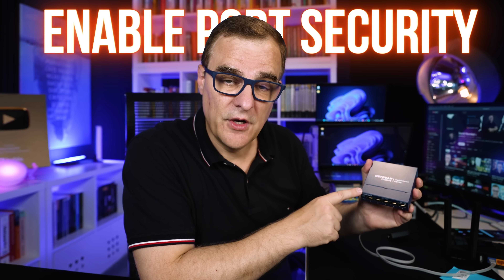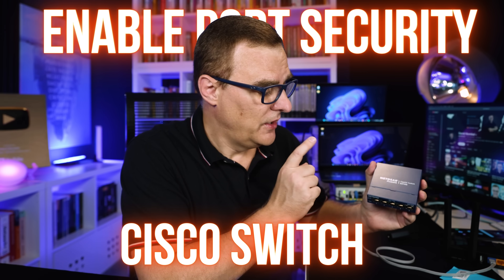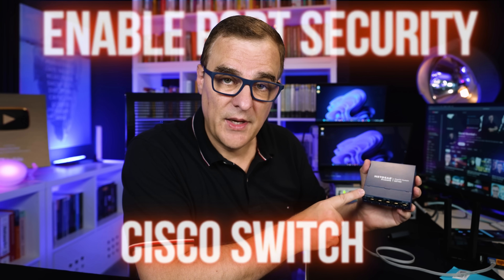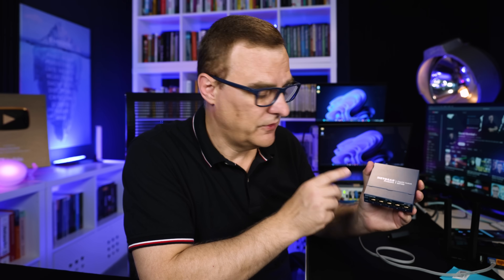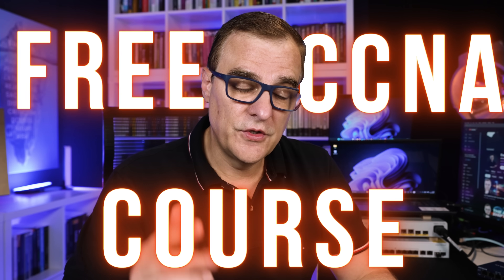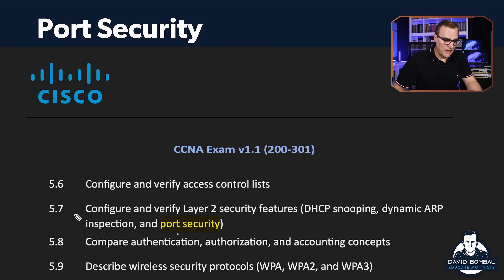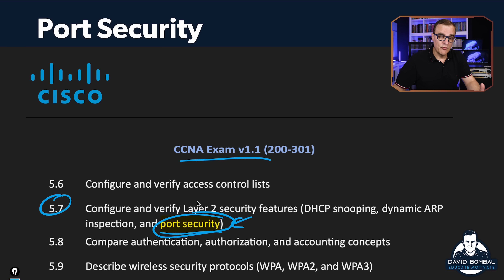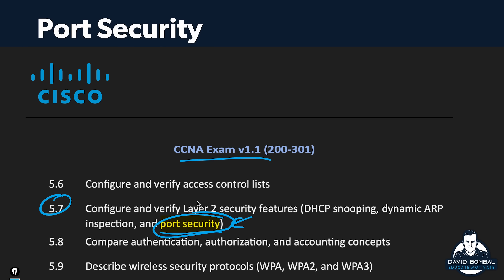So in this video, I'm going to show you how to enable port security on a Cisco switch so that you can stop users from plugging in unauthorized devices — such as switches, Wi-Fi access points, routers, or other devices — into your network. This video is part of my free CCNA course; use the link below to watch the entire playlist. Port security is mentioned in section 5.7 of the CCNA exam, and that's what we're going to cover.